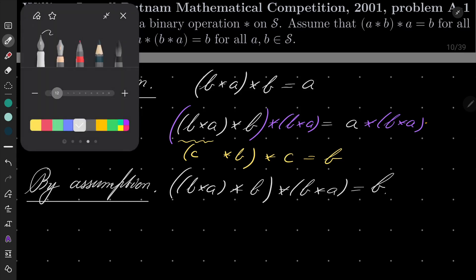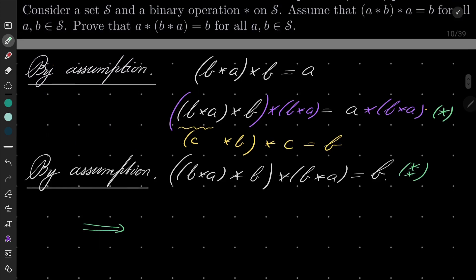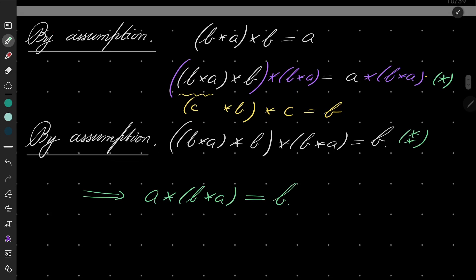So that implies that a star b star a equals just b. And that closes our proof.